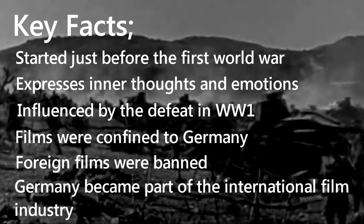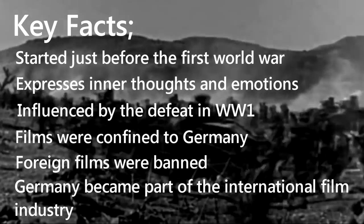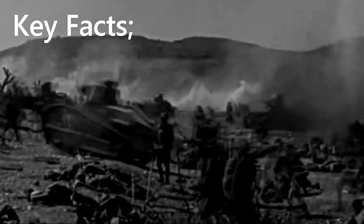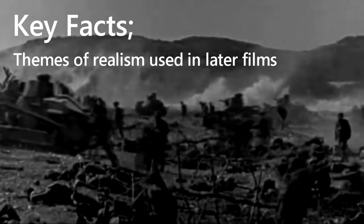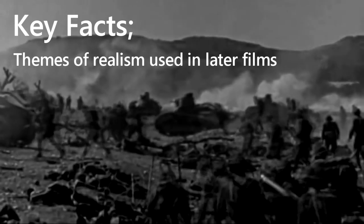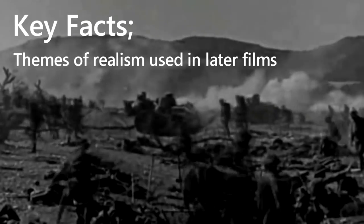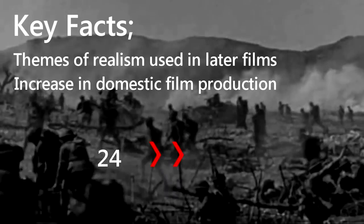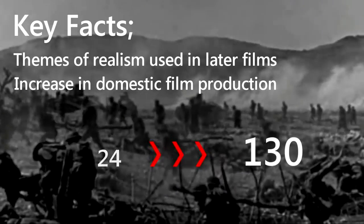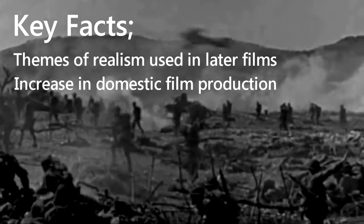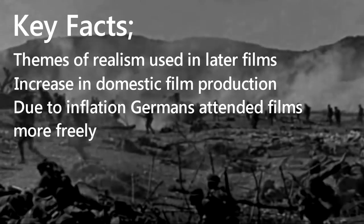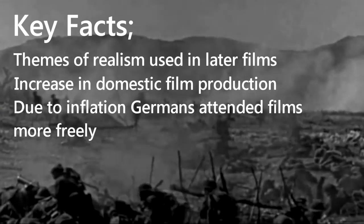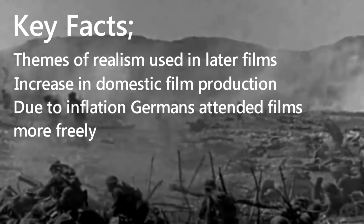The themes of extreme anti-realism in cinema only lasted a few years; however, the themes were integrated into later films around the 1920s. The demand from theatres to generate films led to an increase in domestic film production, from 24 in 1914 to 130 in 1918. With inflation also on the rise, Germans were attending films more freely because they knew that their money's value was constantly diminishing.